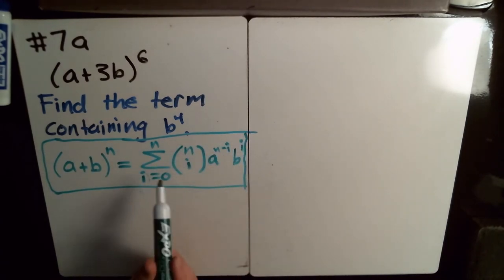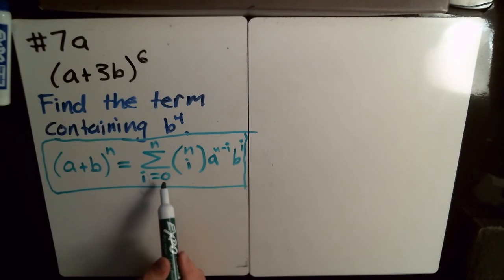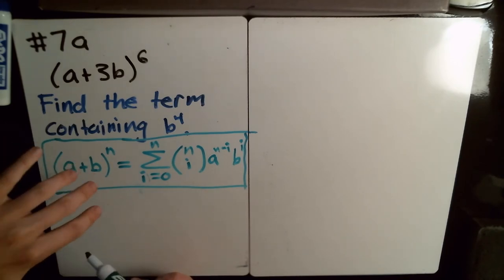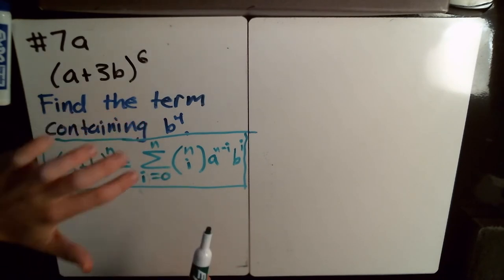And with the sigma notation, it looks really intimidating, right? But this just means I'm starting at 0 and going up to n and plugging in i equals 0 and then adding it to plugging in 1, adding it to plugging in 2, and so on and so forth up until you get to n.